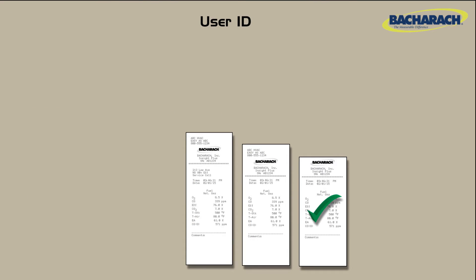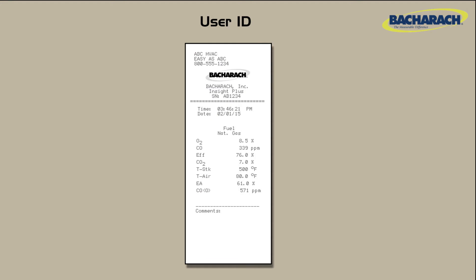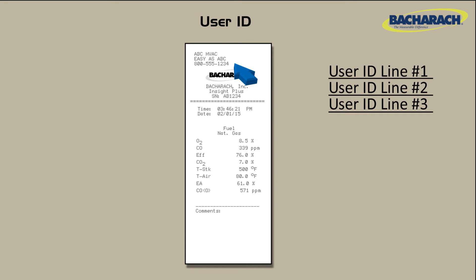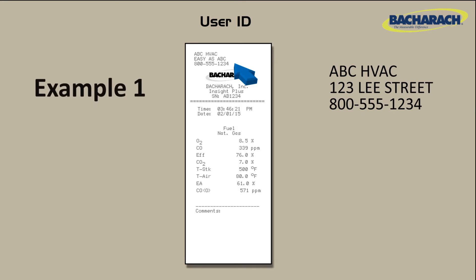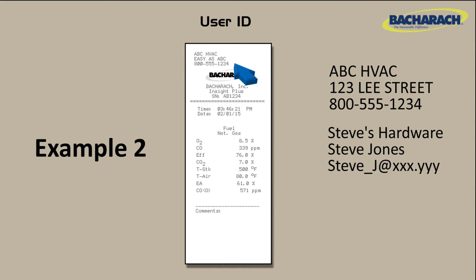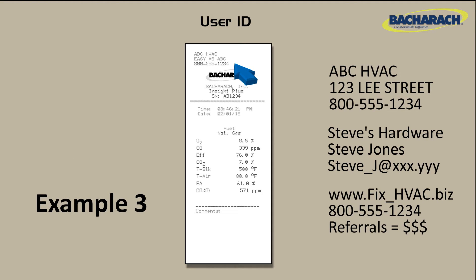If you're comfortable using the basic printout configuration, then you may want to consider adding a customized user ID. This is an easy way to promote your company. Bacharach analyzers typically reserve three lines of text for the user ID, so you can customize it to suit your specific marketing and sales needs. Show a company name, address, and phone number, or perhaps a company name, your name, and an email address. Maybe mention a website, a toll-free number, and a referral bonus option.